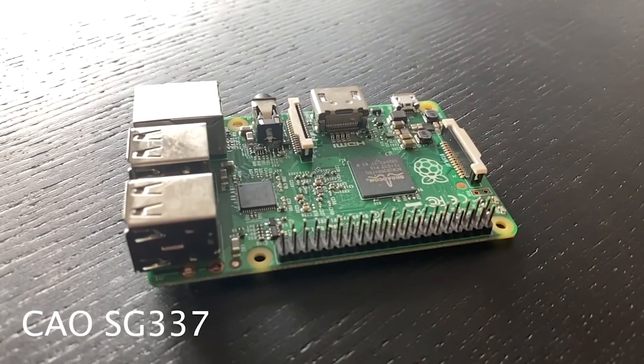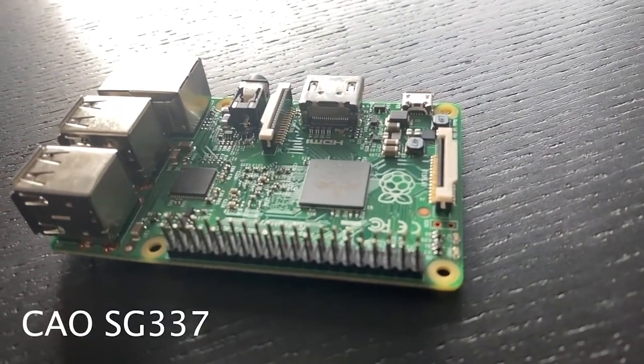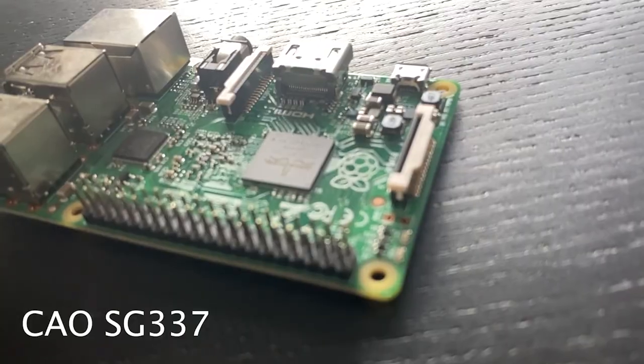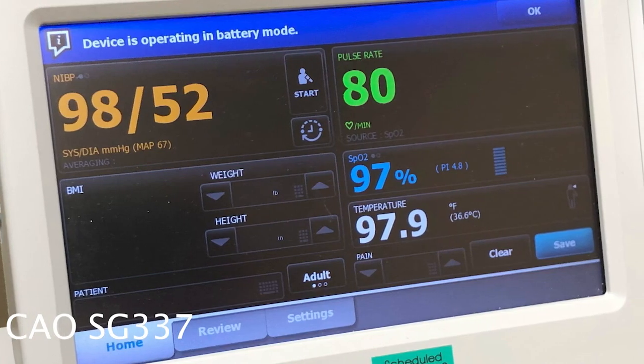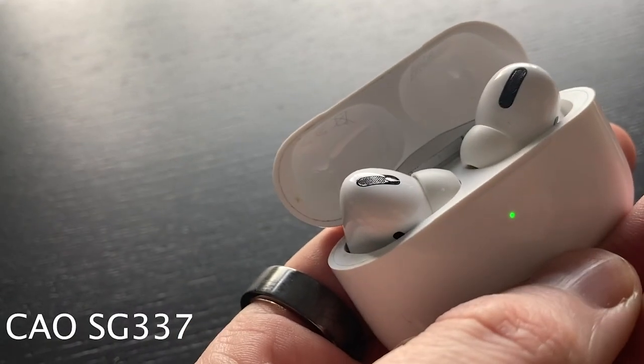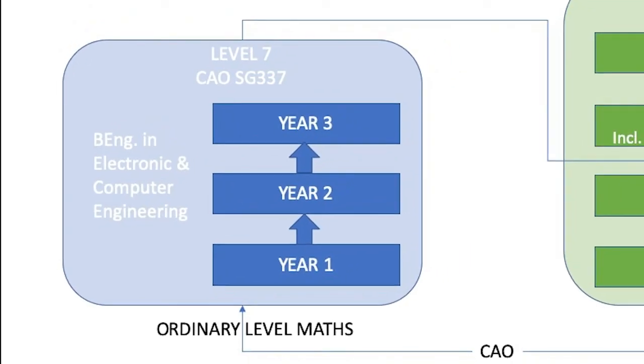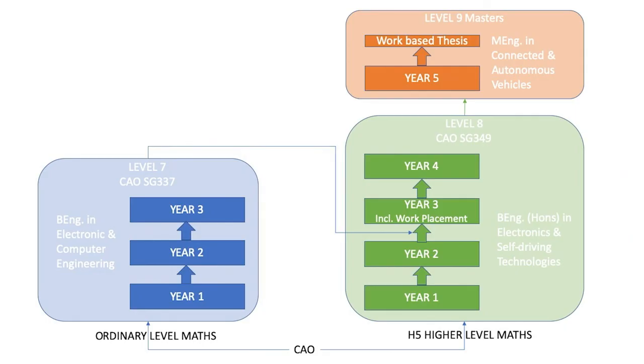If you are interested in technology or engineering but are not doing higher level maths, why not consider our level 7 in electronic and computer engineering. This is a three-year program that looks at the design and development of embedded electronic systems. These are the medical devices that keeps us healthy, the consumer devices that keeps us entertained, or the controlled systems that keeps us safe on the road. You can then progress on to the level 8 in electronics and self-driving technologies and from there to the masters. Check out the link below for more information.